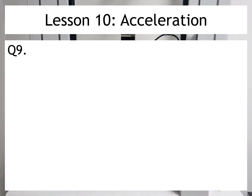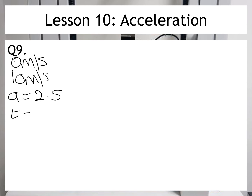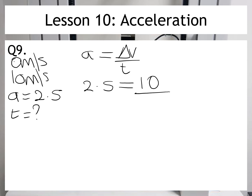So for question 9, I know that the object starts at 0 metres per second and ends at 10 metres per second, so we know it's getting faster. We're told that it accelerates at a rate of 2.5 metres per second squared, but I don't know what the time is. Once again, I'm going to write out the equation and put the numbers in. So a is equal to 2.5. The change in velocity is going to be 10 minus 0, which is 10, and I'm going to divide that by the time, which I'm trying to find out.